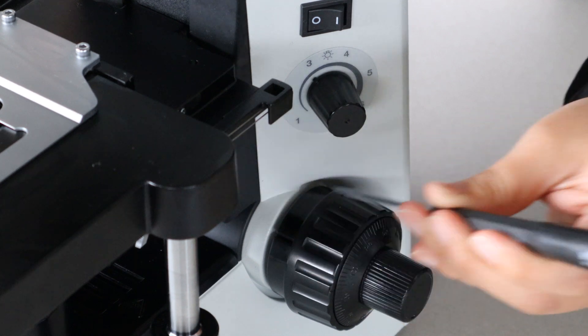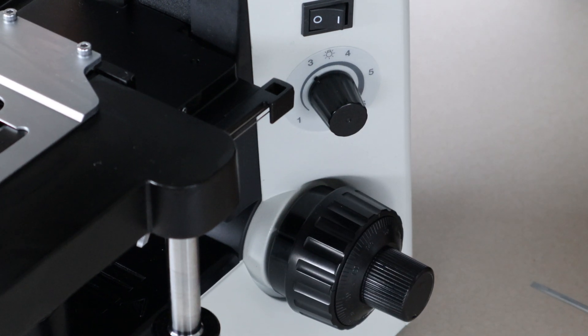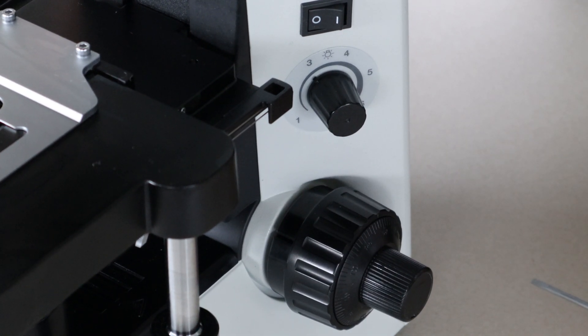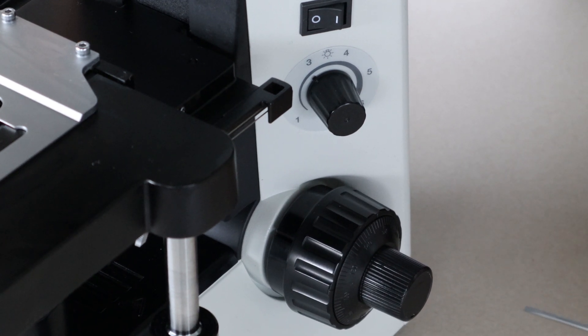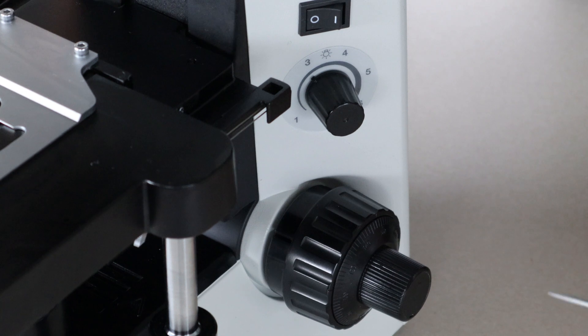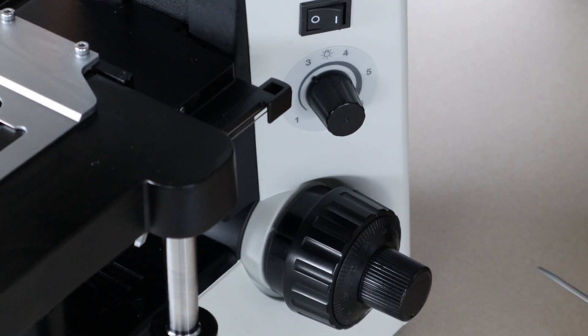And if you have the opposite issue that your tension is too loose, you're just going to stick the screwdriver in the slot and move it in the clockwise direction. You would have this issue if your specimen was falling out of focus over time.